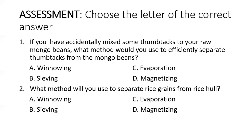Now let's do our assessment to check how much you've learned from today's lesson. Choose the letter of the correct answer and write it in your activity notebook. Number 1: If you accidentally mixed some thumbtacks into your raw mongo beans, what method would you use to efficiently separate them? A. Winnowing. B. Sieving. C. Evaporation. Or D. Magnetizing. Number 2: What method will you use to separate rice grains from rice hull? A. Winnowing. B. Sieving. C. Evaporation. Or D. Magnetizing.